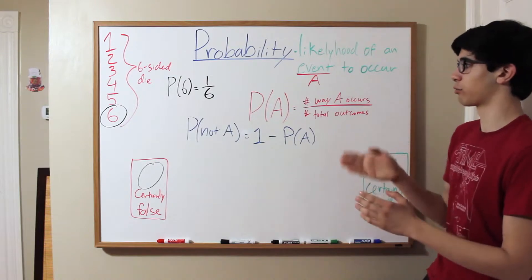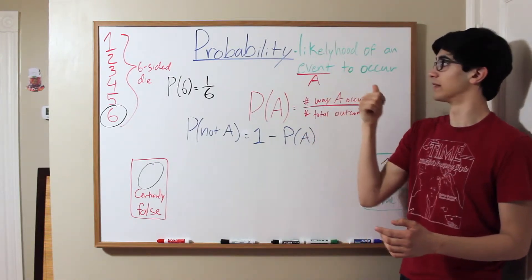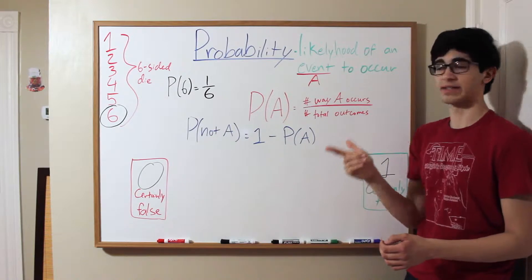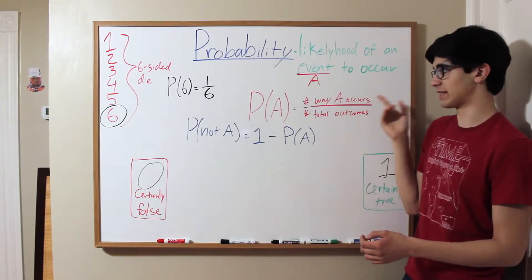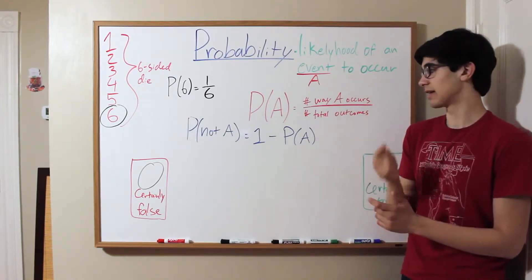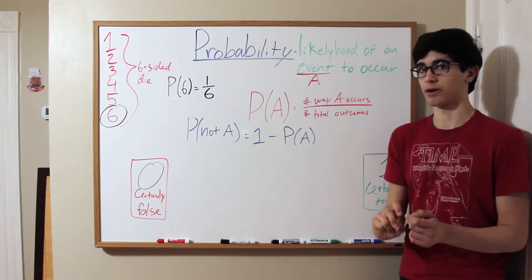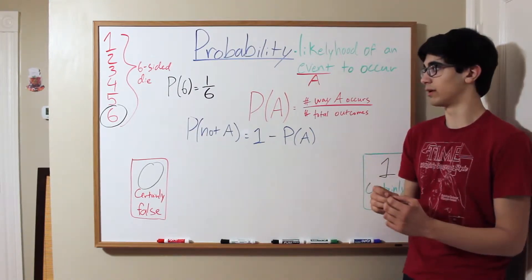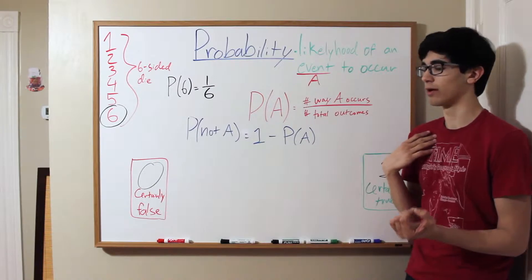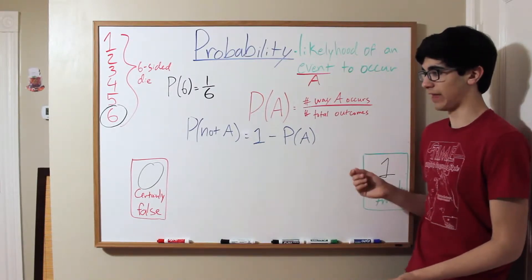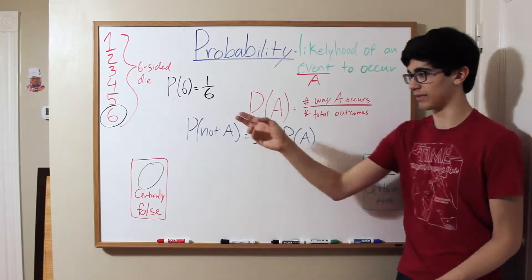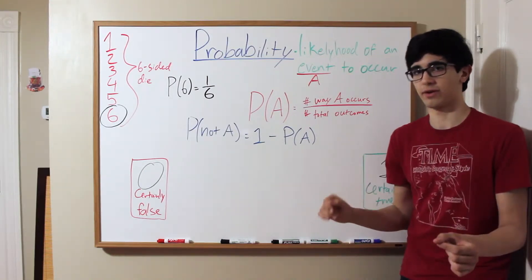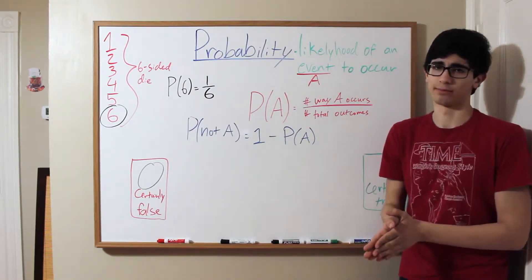I've already discussed how probability is the likelihood of an event happening — the number of ways that event, we call it event A, can happen divided by the number of total outcomes. If you need a refresher on that, or want to see more about how that relates to the probability of something never happening and the probability of something always happening, please watch my other video on introduction to probability.